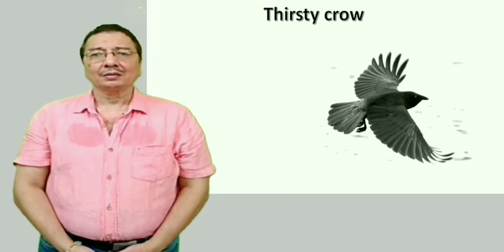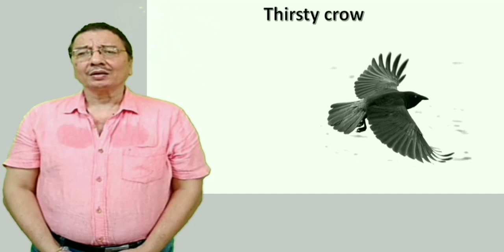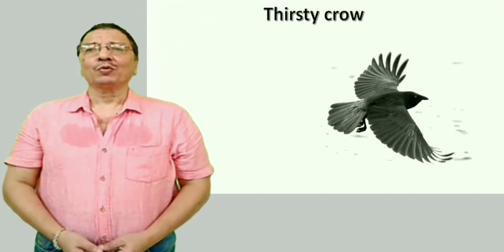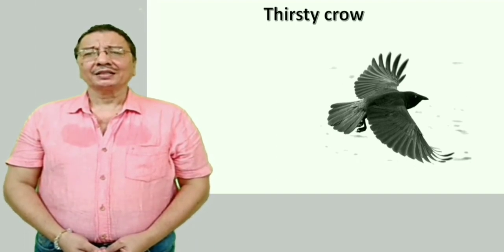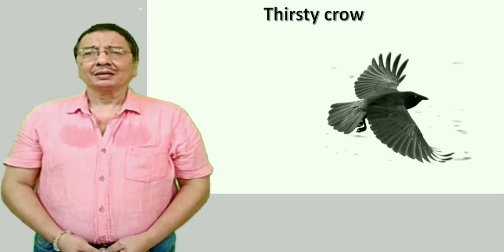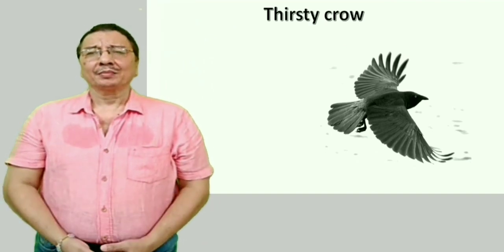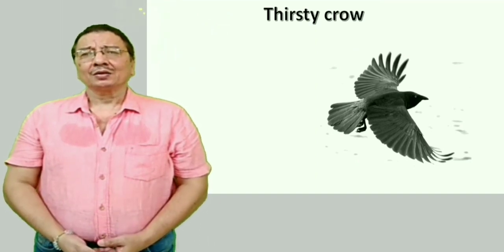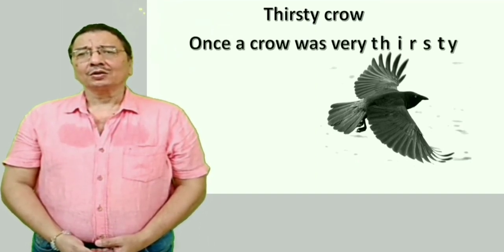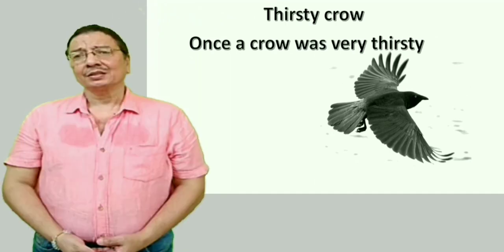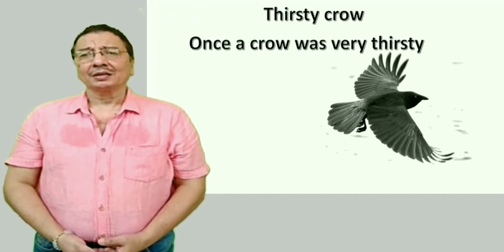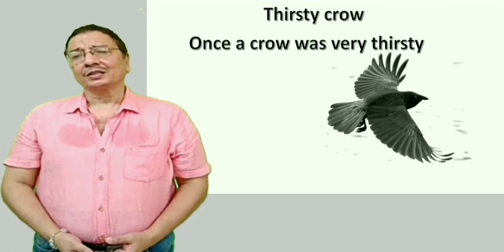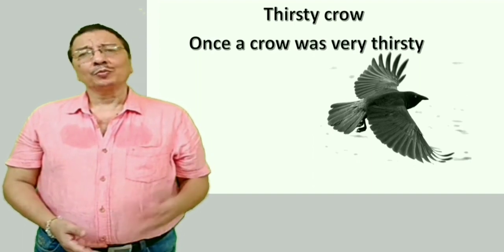Piasa kawah — ek samay, ek kawah bhoot piasa tha. 'Ek samay' means 'once'. If we want to say 'once upon a time' we say 'once upon a time', but if we just say 'ek samay', then it is 'once'. So: 'Once a crow was very thirsty.' For 'tha' (was), we use 'was'. Pyasa means thirsty. Once a crow was very thirsty.